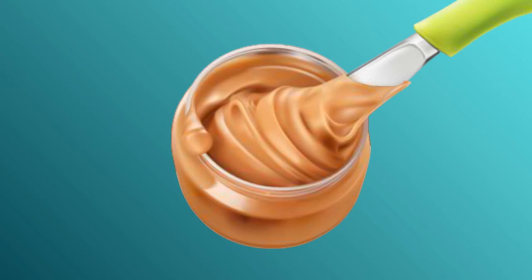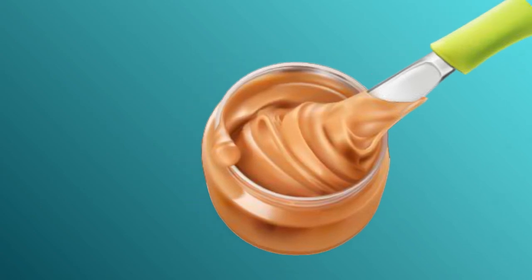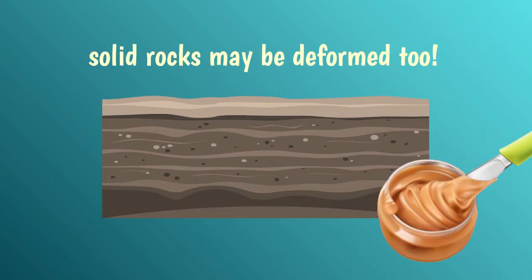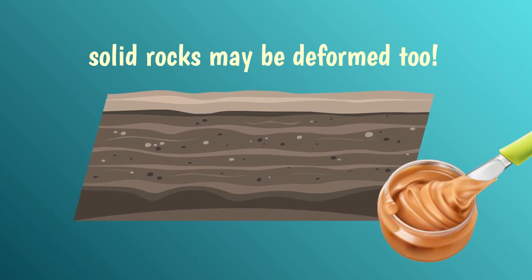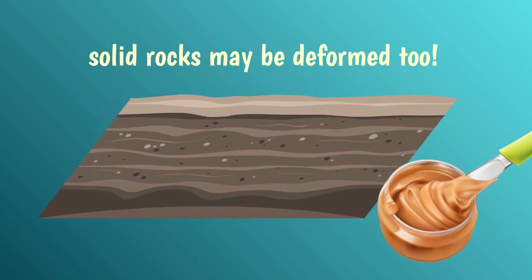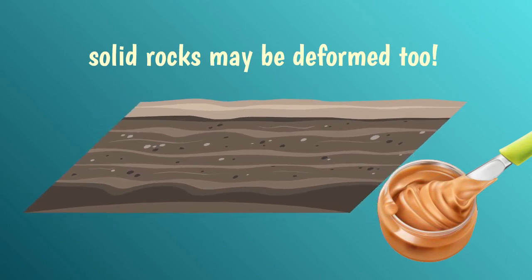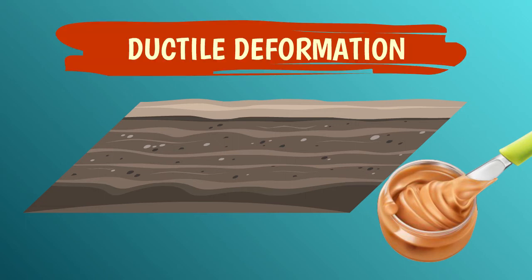You have probably learned that a solid is something that keeps its shape even without a container. But let's think of peanut butter, for example. It's pretty solid, and yet it can change shape when you spread it with a knife. As it turns out, if we consider a sufficiently long period of time — say hundreds of thousands of years — and if the temperature is right, rocks too can behave like peanut butter and be deformed. In this case, we say that the rocks are ductile.